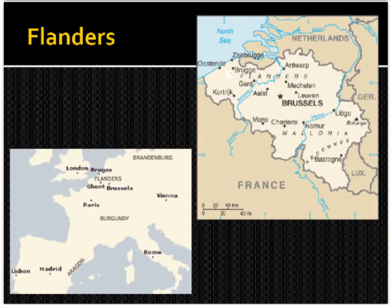Flanders is also an important trade area located in Northern Europe — in modern-day Belgium, in Northern Belgium. Brussels is the capital of Belgium today. Flanders traded mostly with the northern sections of Europe and, like Venice, was one of the major trade cities during the Middle Ages.